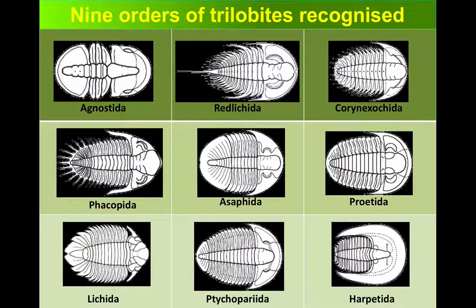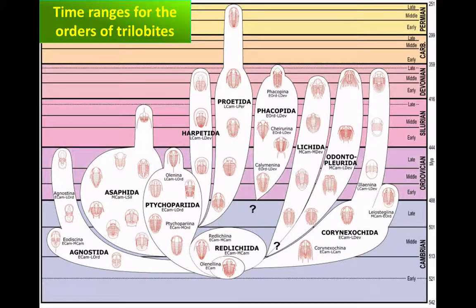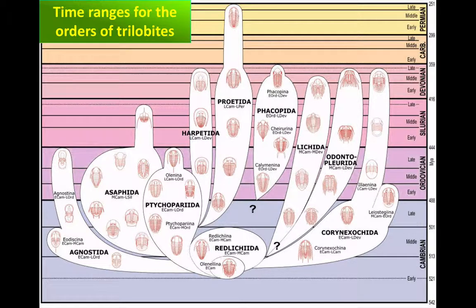With this diversity, nine different orders of trilobites have been identified. We can see from this cladogram these different orders being quite diverse from relatively early on — from the Cambrian period through particularly the Ordovician — and then really starting to decline after that. There was only one order which survived even into the late Paleozoic.